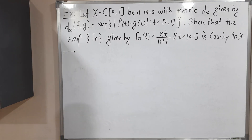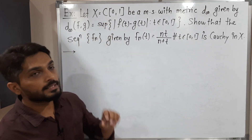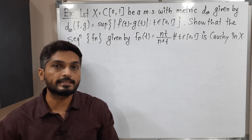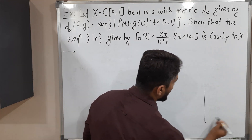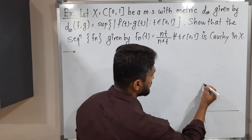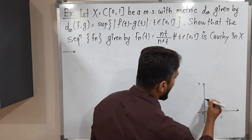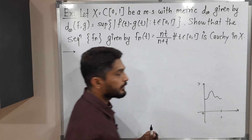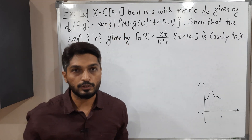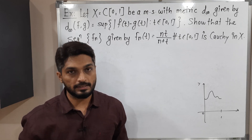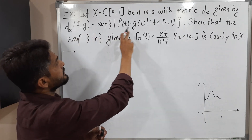Hi everyone. In this video we are going to discuss this example. So what we have? We have X, where X is equal to C on the closed interval [0,1]. It means the set of all continuous functions defined on the closed interval [0,1]. They have mentioned it is a metric space with this metric D∞, and D∞ is defined in this way.